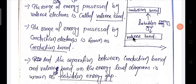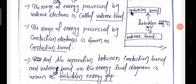The gap between the valence band and the conduction band is called the forbidden energy gap. Electrons can stay in the valence band and the conduction band, but the electrons cannot stay in the forbidden energy gap — there is no electron in the forbidden energy gap.